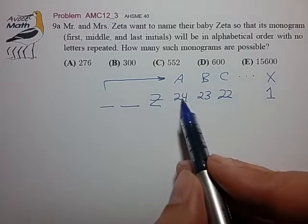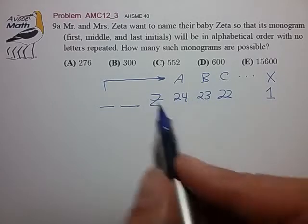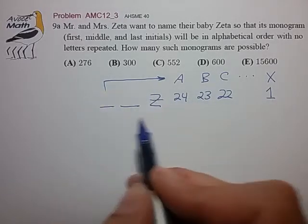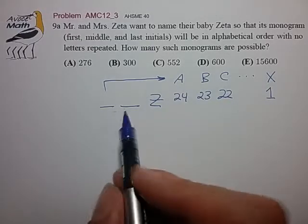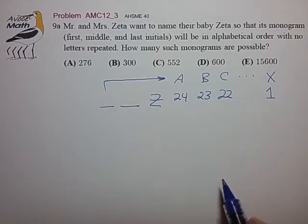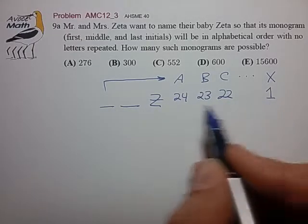So we've broken it up into these 24 sub cases, and now the total ways that we can arrange these three letters to form the full monogram is just the sum of these tabulated cases.